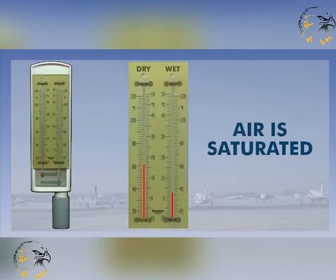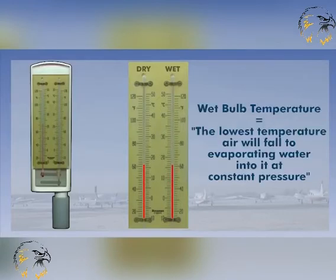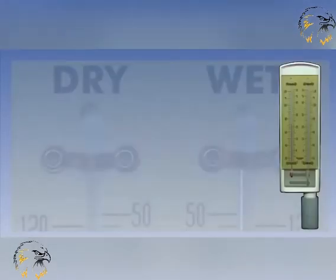If the air is saturated, no water will evaporate, and the two thermometers will read the same. The wet bulb temperature is defined as the lowest temperature air will fall to by evaporating water into it at constant pressure. The difference between the dry bulb and the wet bulb decides how moist or humid the air is.